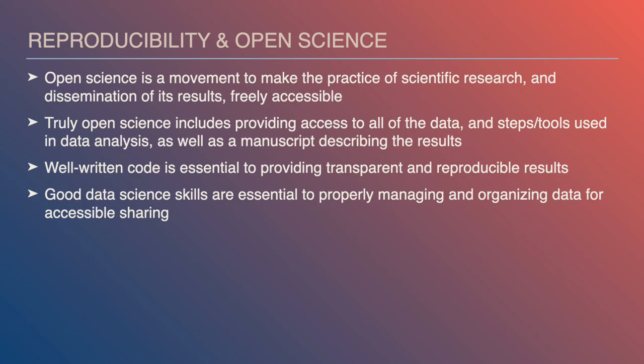Well-written code is essential to providing transparent and reproducible results. You can write code to do data science in many different ways and get the same end result, but some approaches are more transparent, clear, and better documented than others. Part of open science and reproducibility is not just providing your code, but writing code that adheres to good programming style — clear, systematic, and well-documented. Good data science skills are therefore essential to properly manage, organize, and share the code that produces the results.